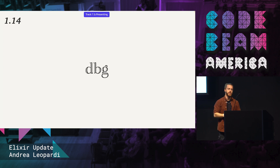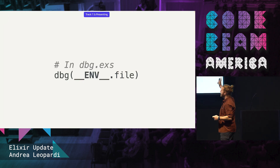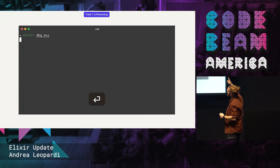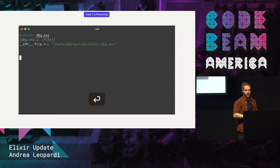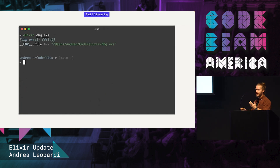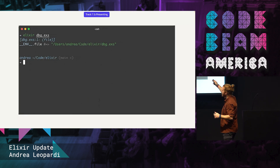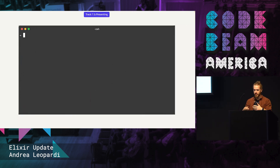DBG is something a bunch of other languages have at this point. It's a macro that lets you print code nicely. It's essentially io.inspect on steroids. When you run it, it prints the location of the call, the expression you're printing, and then the value on the right. We've all been using io.inspect for this for a very long time, and then we added label to make it a bit more useful. DBG is the evolution of that — you just write DBG on an expression and it prints a bunch of information. This works because DBG is a macro, so it understands Elixir code.